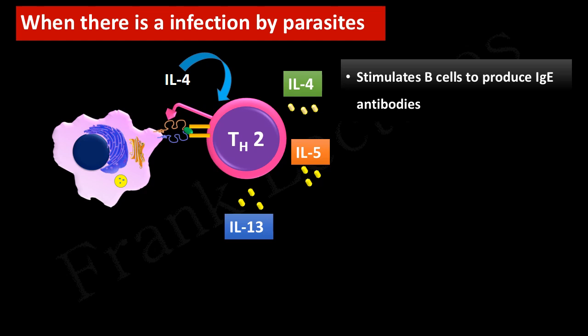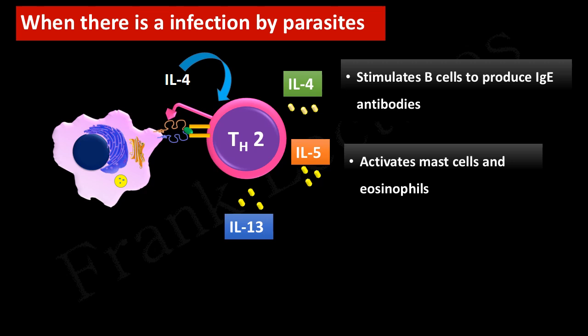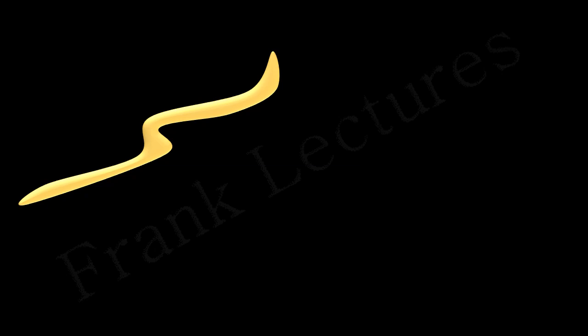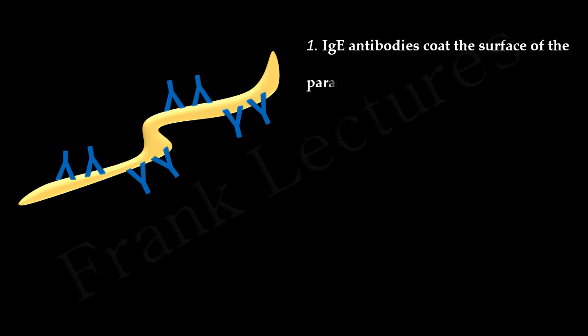Interleukin-4 stimulates B cells to produce IgE antibodies. Interleukin-5 activates mast cells and eosinophils. Interleukin-13 stimulates the production of mucus in the intestines. We know that the size of these parasites is too large and they cannot be phagocytosed. Let's have a look at how these cytokines contribute to the elimination of these parasites.